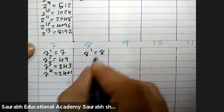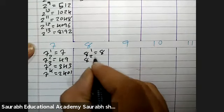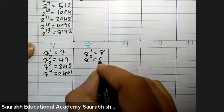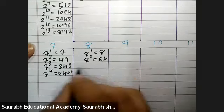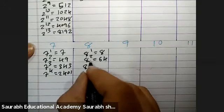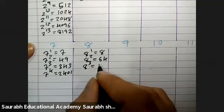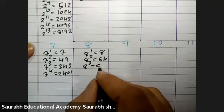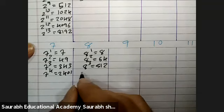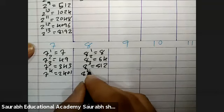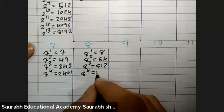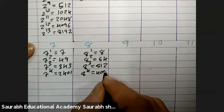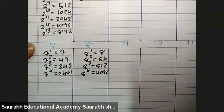8 raise to 1 is 8, 8 raise to 2 is 64, 8 raise to 3 is 512, 8 raise to 4 is 4096.